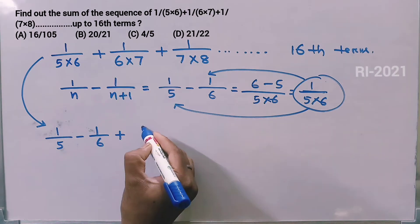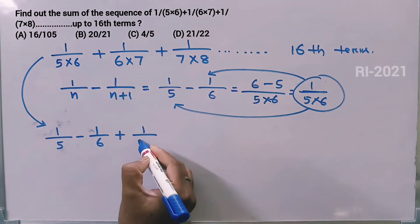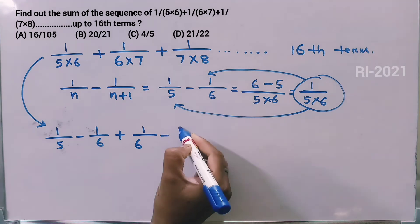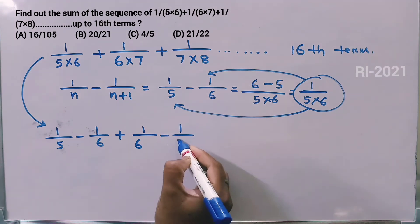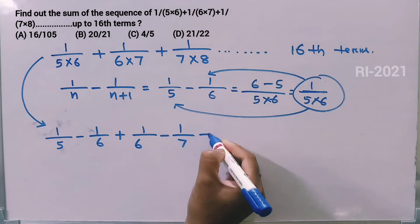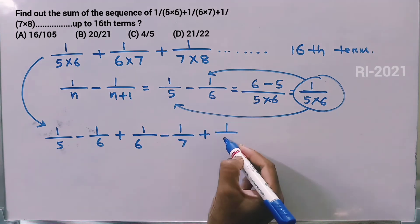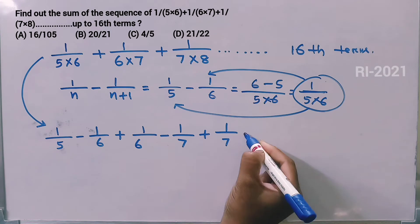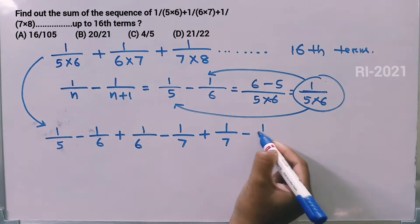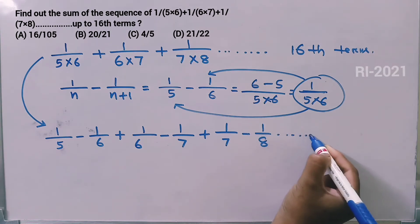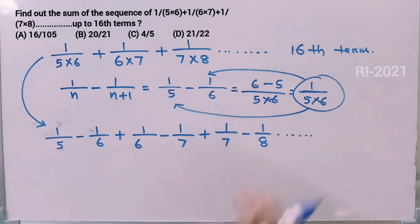Expanding all terms: (1/6 - 1/7) + (1/7 - 1/8) ... up to 16 terms. This is a telescoping series where intermediate terms cancel.